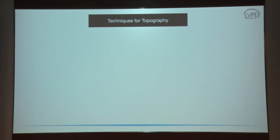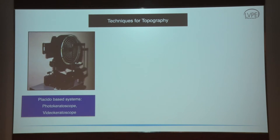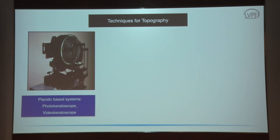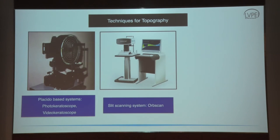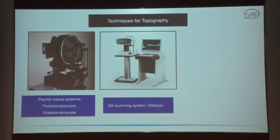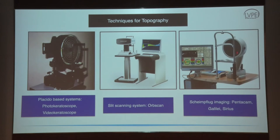What are the different techniques available for topography? First is the Placido-based system, such as the photokeratoscope or videokeratoscope. It is mainly based on reflection of a Placido disk on the tear film and the reflected image is measured. Second is the slit scanning system, mainly used by Orbscan, which analyzes the parallelepiped image like in a slit lamp. Several slits are sent medial to lateral and back, measuring anterior and posterior corneal curvature. Last is the Scheimpflug system, used by Pentacam, Galilei, and Sirius.